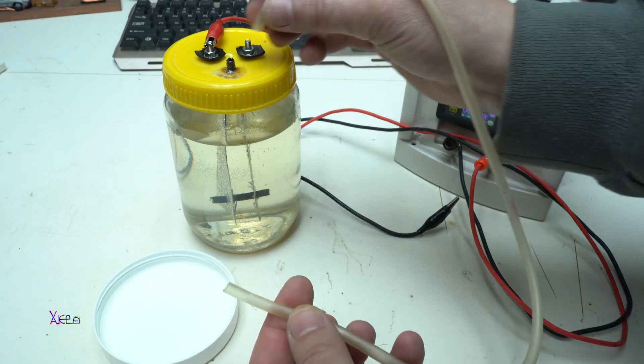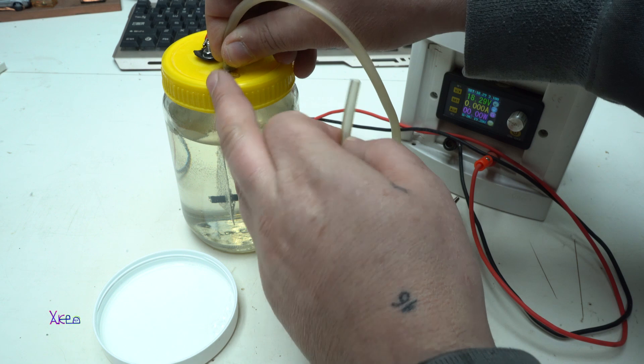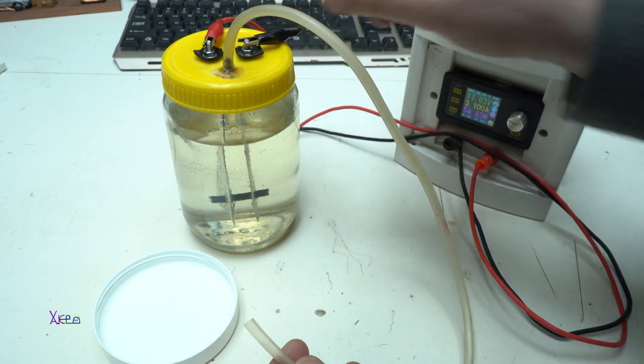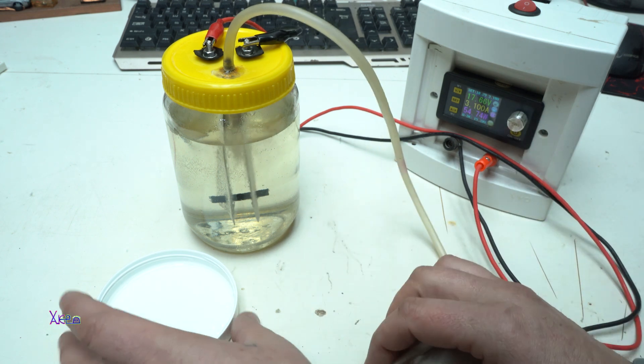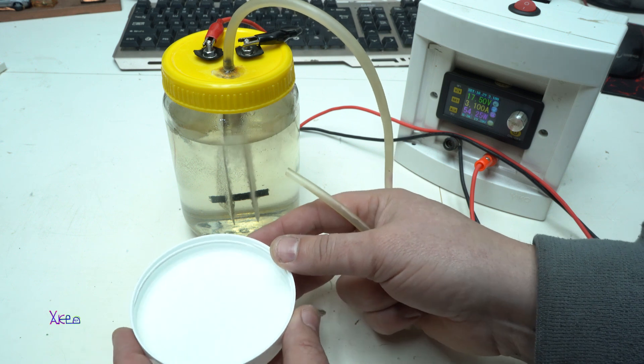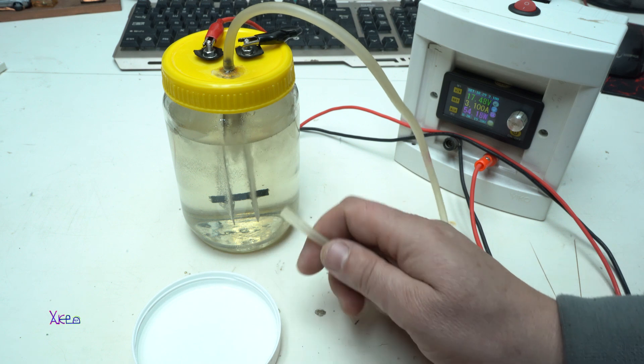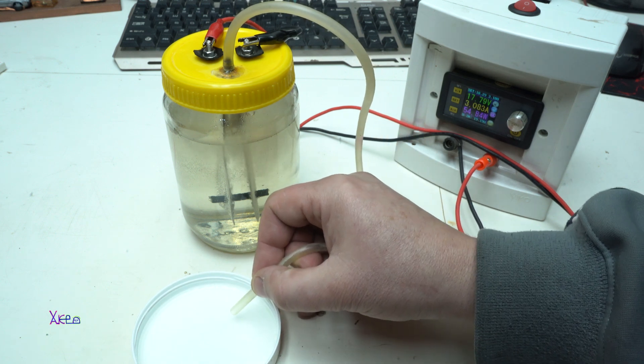Here I have a small hose. I'm gonna attach it on the valve right here. Activate the generator. Oh 3.1 amps. And here in this small lid I have a mix of water with soap. So we can make the bubbles out of oxygen and hydrogen.